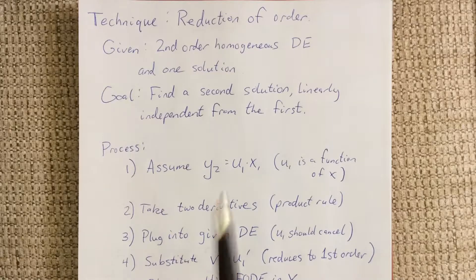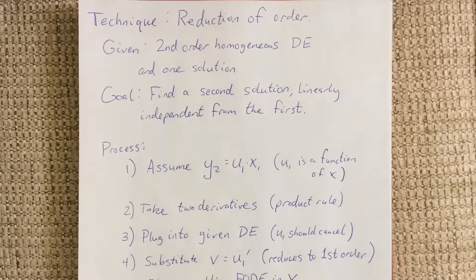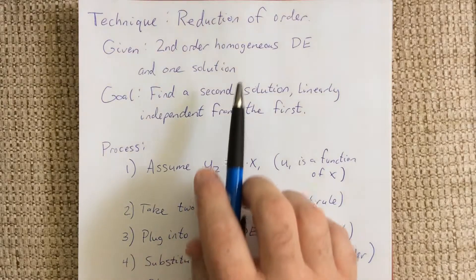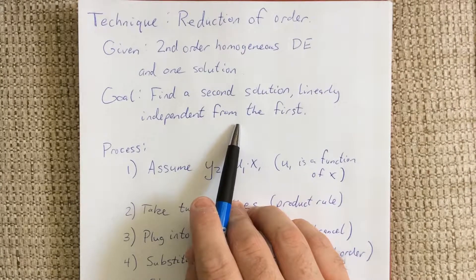This technique is referred to as reduction of order. The idea is if you've been given a second-order homogeneous differential equation with one of the solutions, the technique of reduction of order will allow you to figure out a second linearly independent solution. We know that for a homogeneous second-order linear differential equation, the solution space should be a two-dimensional vector space, meaning that there should be two linearly independent solutions. So if we have one, the technique of reduction of order will help us get the second.